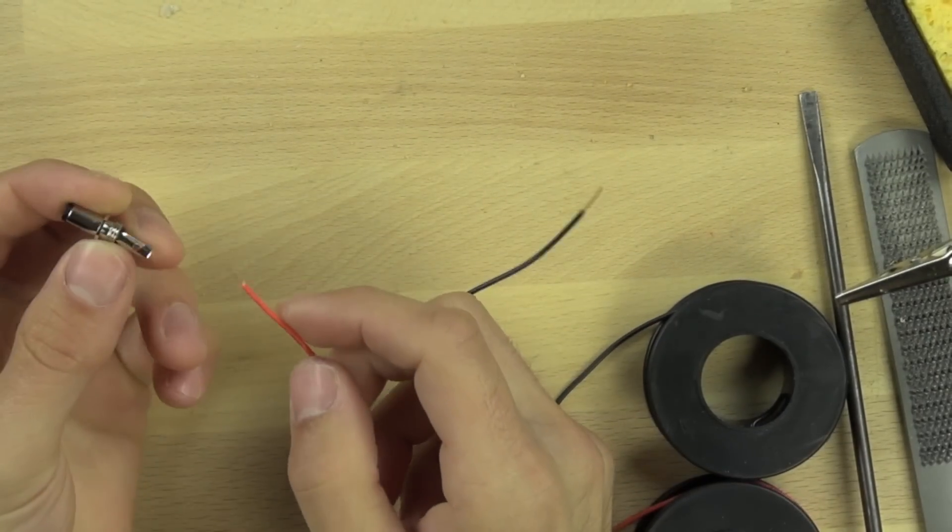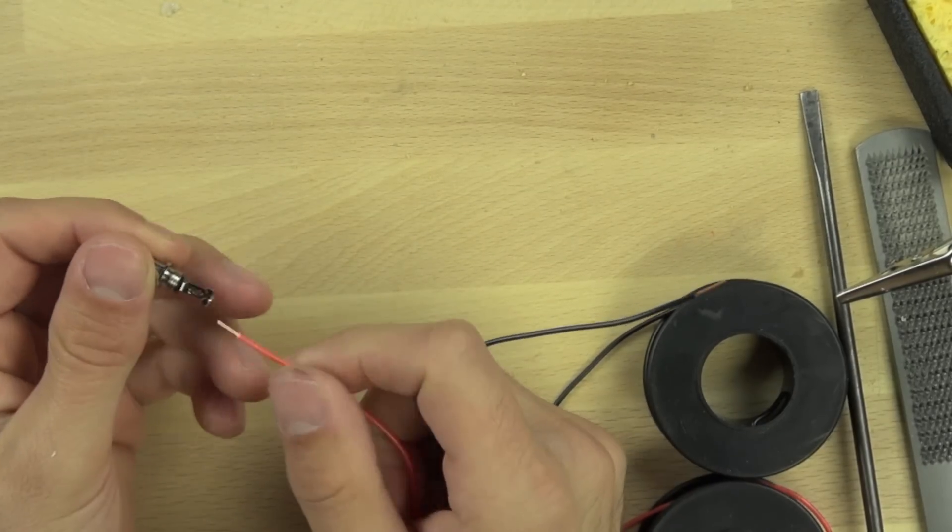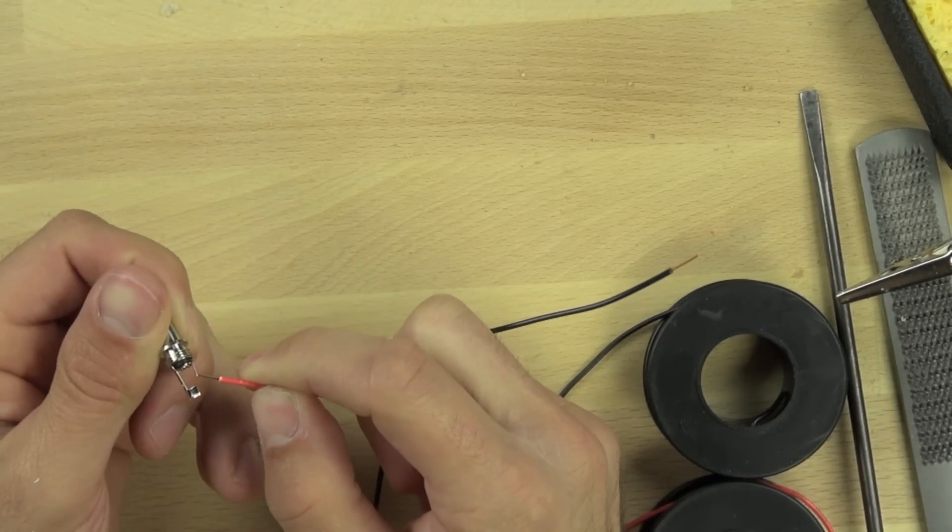In this video we're going to show you how to make a power connector for your Arduino. The most important thing to remember is that the center pin of our connector is positive.